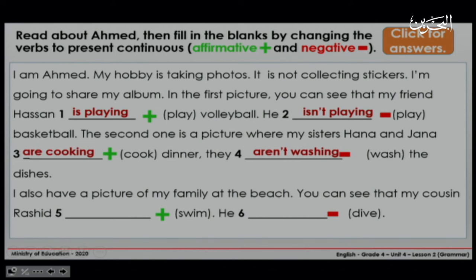I also have a picture of my family at the beach. My cousin Rashid... — the verb 'swim', affirmative form. Remember, how do we change 'swim' to present continuous? We have a vowel and then a consonant, so we double the M: my cousin Rashid is swimming. 'He...' — the verb 'dive', negative form: he isn't diving. As you can see, we dropped the silent E and added -ing.